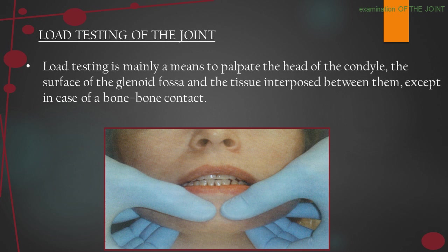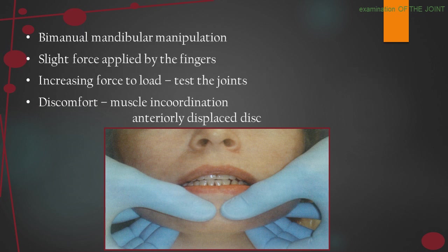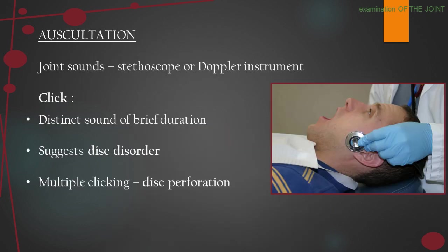Load testing of the joint is mainly a means to palpate the head of the condyle, the surface of the glenoid fossa, and the tissue interposed between them, except in case of bone-to-bone contact. Using the thumb and three fingers, manual mandibular manipulation is performed with slight increasing force applied. If there is discomfort, muscle incoordination or anterior displacement can be noted. In auscultation, joint sounds are noted using a stethoscope or Doppler instrument.